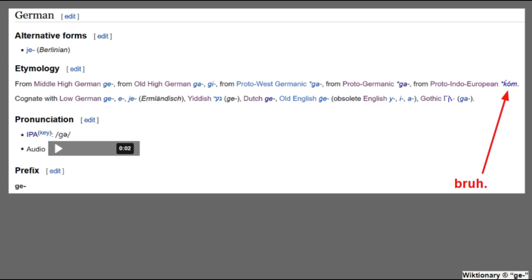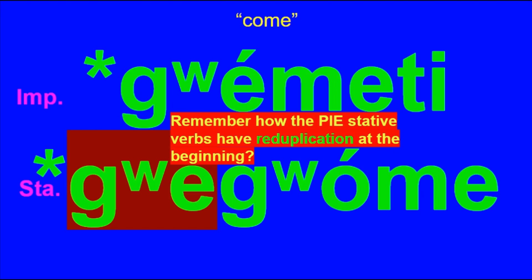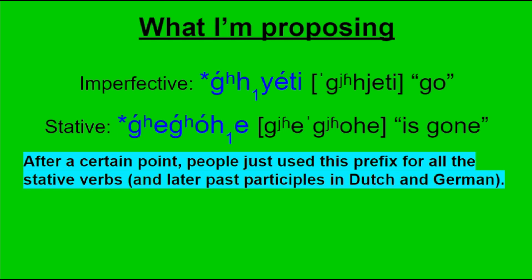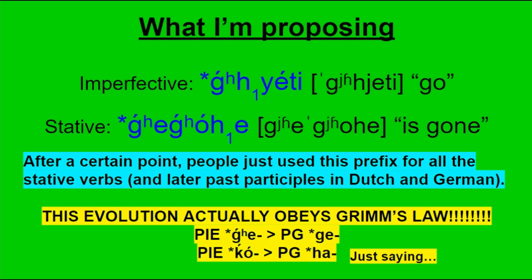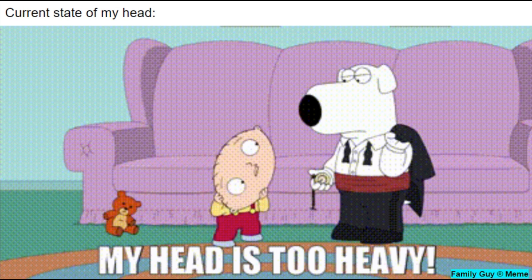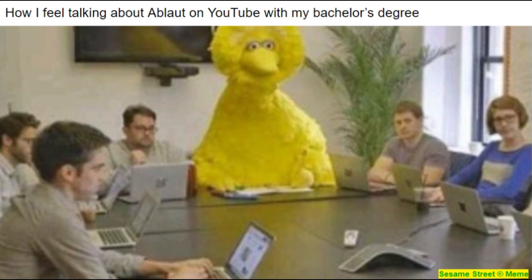But also as a complete side note: if you happen to write on Wiktionary that the Germanic ge- prefix on past participles comes from PIE *kom, I'd like to present an alternative hypothesis based on PIE's stative verbs. I feel like instead, the ge- prefix is based on a common PIE verb starting with gw or gw, probably *ghety meaning 'go', and its stative prefix just got extended to other verbs. This hypothesis has the advantage that it actually follows Grimm's Law! Also, if you left a comment on the video about Germanic grammatical evolution asking me the origin of the ge- prefix, I have a new answer for you.